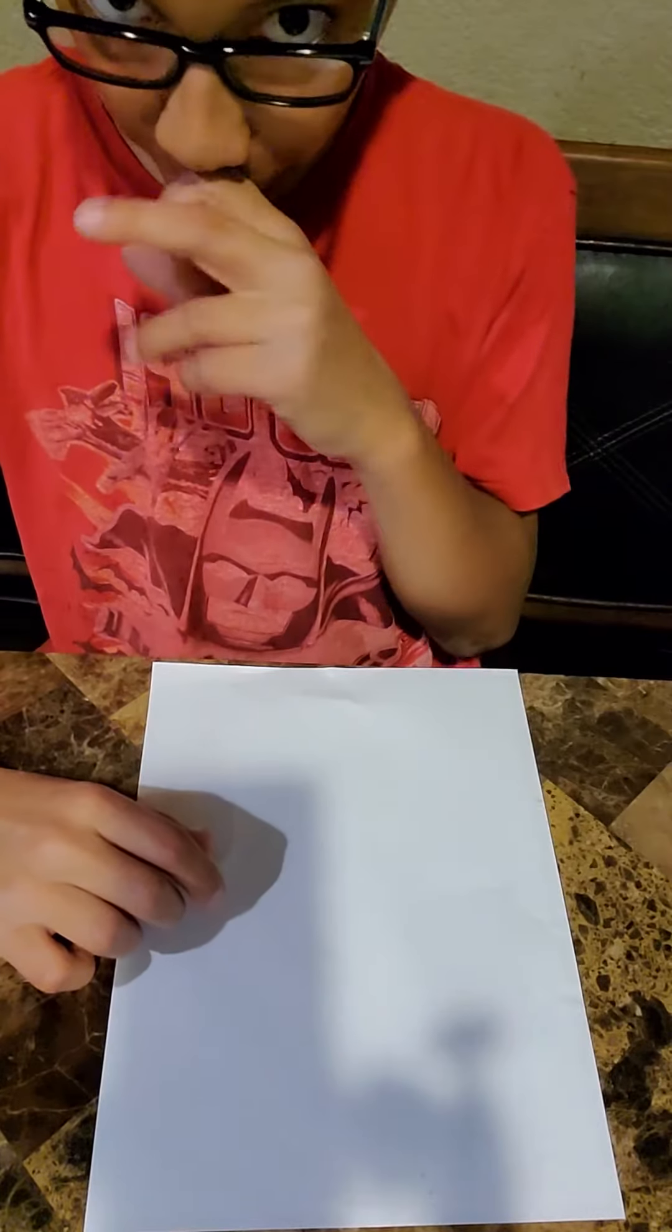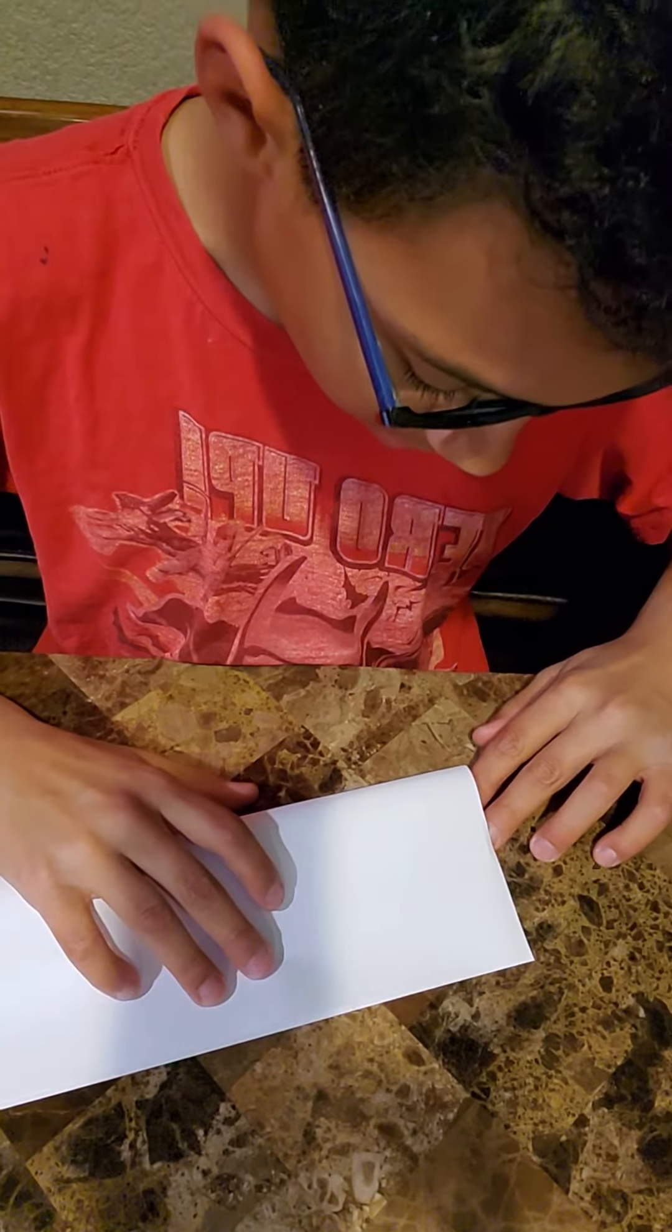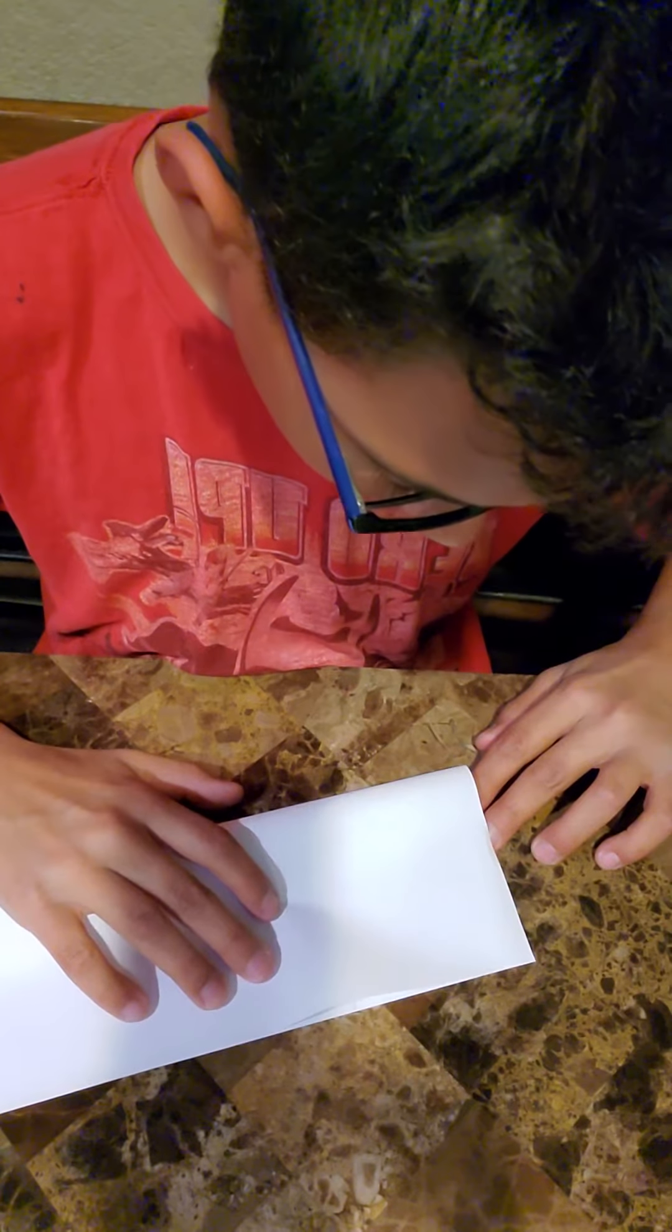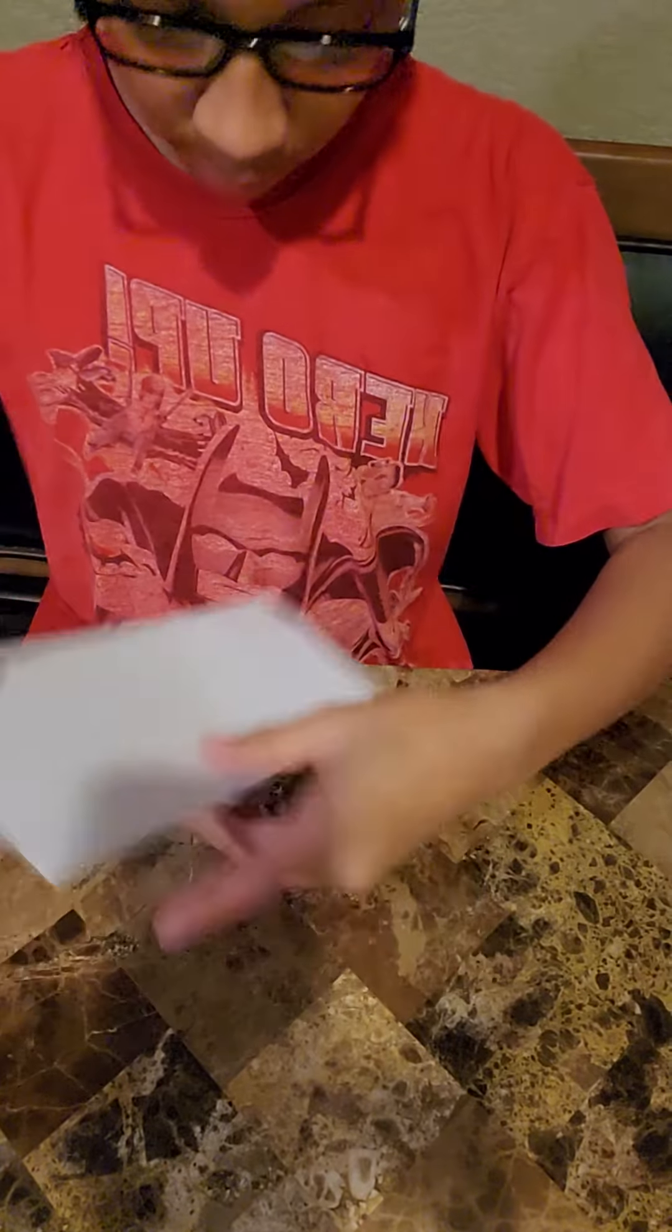Okay, I have a sheet of paper. Now, for this first step, fold the airplane in half, like most airplanes. Like so. Then, unfold it. It should look like this. A crease in the middle.